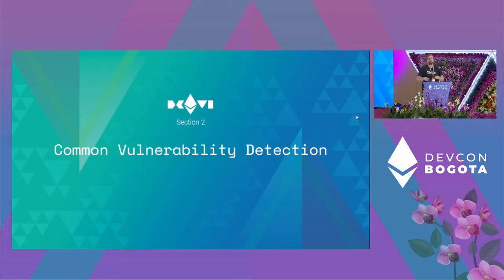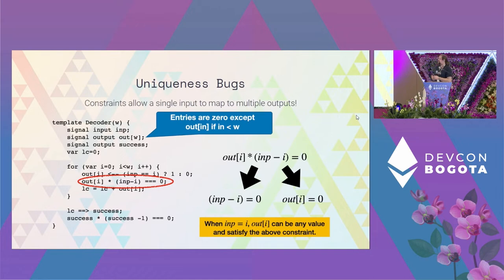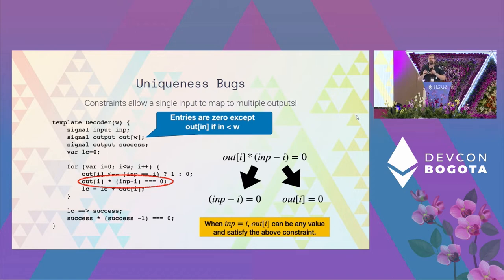We're going to look at some of the open source tools provided by Veradice that fall into these categories. First, we're going to talk about a static analyzer which performs common vulnerability detection on Circom programs. This is the type of bug found by a static analyzer we created called Pycus. Basically what it looks for is uniqueness bugs. A uniqueness bug occurs when a constraint allows a single input to map to multiple outputs.